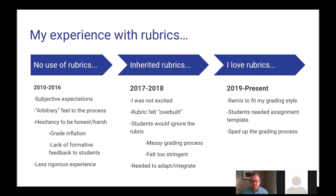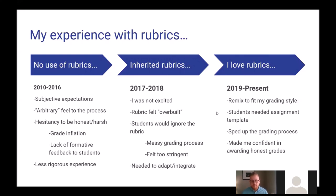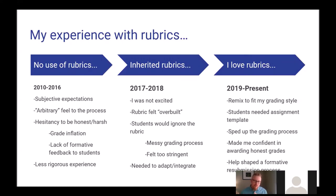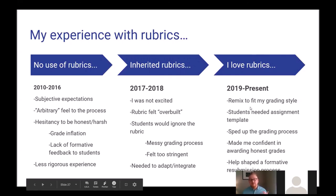When students follow the template and rubric it's very clear to see they've done the work, and I became more confident in awarding honest grades. When giving students 50 points off a 200-point assignment or even 100 points off, I knew how to defend it: 'It doesn't match the rubric.' That also helped shape a formative resubmission process — I tell students they can earn back 60 percent of the points they lost if they revisit and resubmit. Some students take that opportunity and others don't, but overall I've been very pleased.